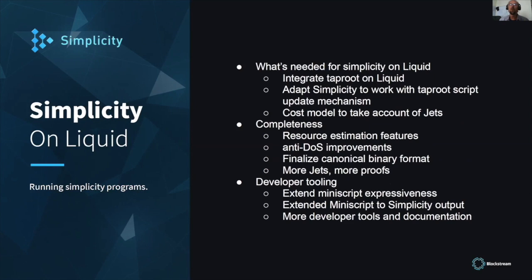When do we get access to Simplicity? What we're doing first is — with today's release — Simplicity is available in a branch of Elements, which is the open source platform that Liquid is built using. Also, there's Simplicity in a branch of Bitcoin that people can try out. Those are both in regtest mode, which means there's not really a network — it's kind of a single node instance — but you can try things out.